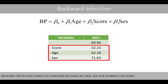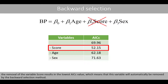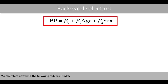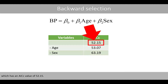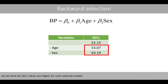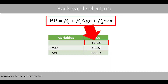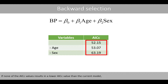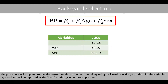Remember that the best model is the model with the lowest ISE value. Out of all variables in this model, the removal of the variable score results in the lowest ISE value, which means that this variable will automatically be removed by the backward selection method. We therefore now have the following reduced model, which has an ISE value of 52.15. If we try to remove the variables age and sex from this model, we see that the ISE values are higher for such reduced models compared to the current model. If none of the removals result in a lower ISE value than the current model, the procedure will stop and report the current model as the best model. By using backward selection, a model with the variables age and sex will be reported as the best model, given our example data.